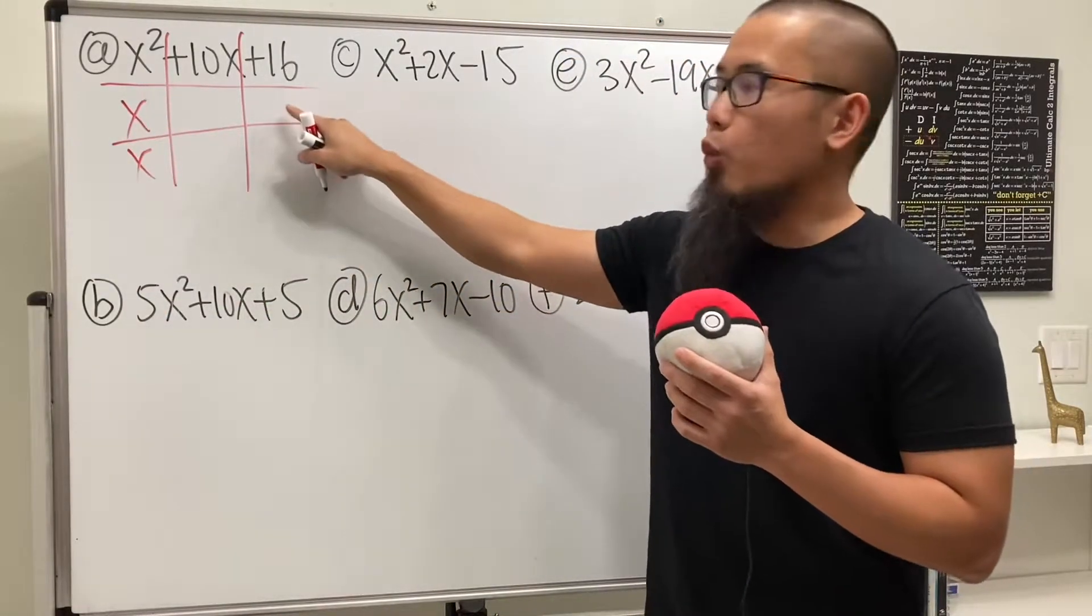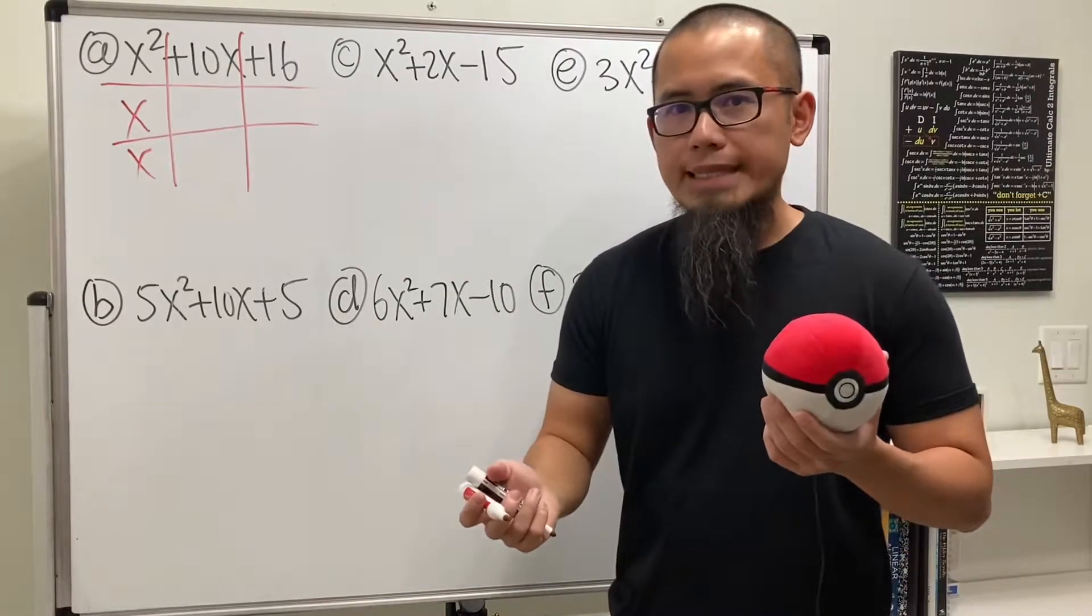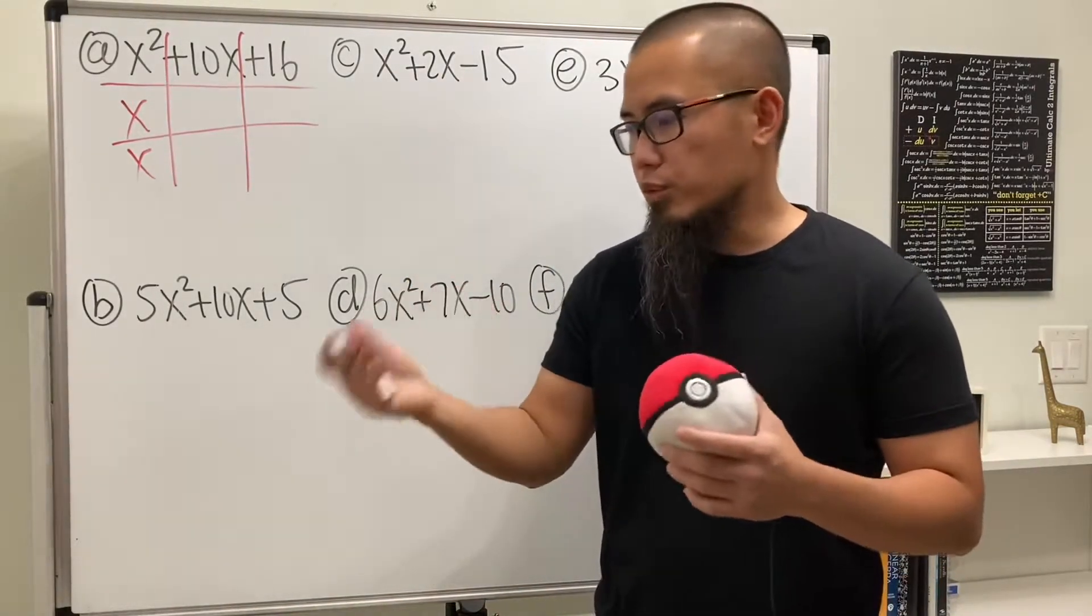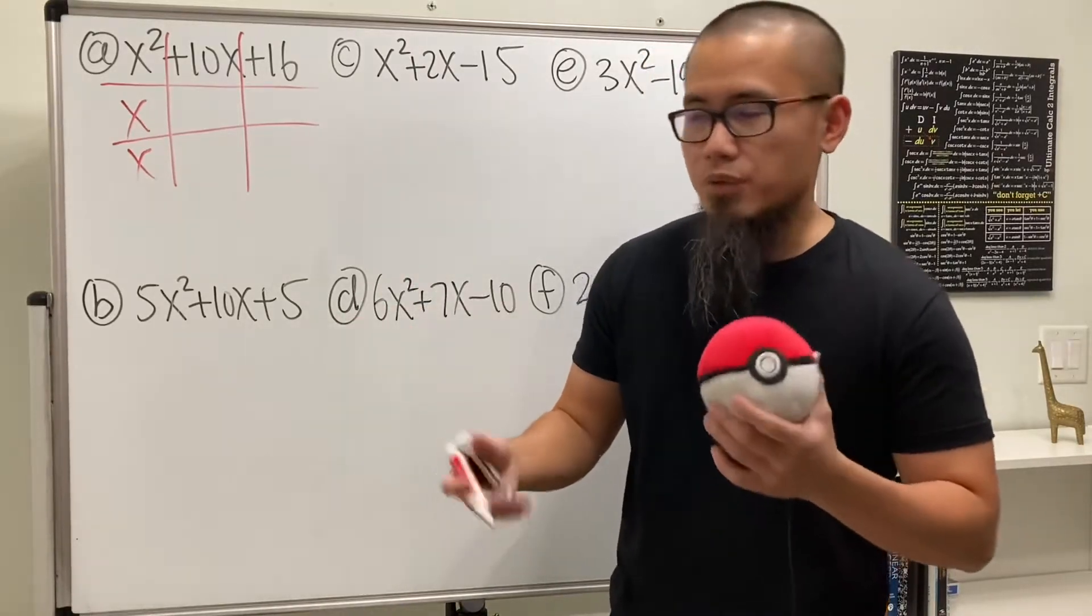And then we come here and we ask ourselves, what times what gives us 16? Well, we have a couple choices, right? 1 times 16, or 2 times 8, or maybe 4 times 4, and maybe negative 4 times negative 4. Things like that.